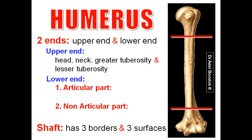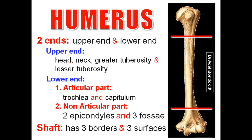Regarding the lower end, it is formed of an articular part and a non-articular part. The articular part is formed of trochlea and the capitulum — the trochlea is medial, the capitulum is lateral. The non-articular part is formed of two epicondyles and three fossae. The medial epicondyle is more projecting than the lateral. The three fossae: coronoid fossa above the trochlea anteriorly, radial fossa above the capitulum anteriorly, and the olecranon fossa posteriorly.